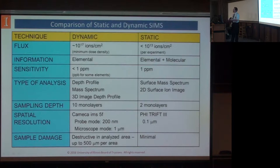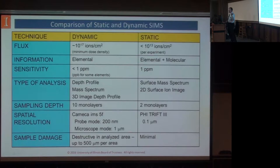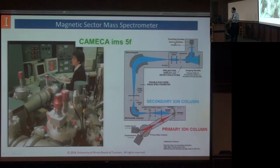Static SIMS came about later and is really neat. The concept is: if we only affect 1% of the surface, is it really destructive? 99% of it's still okay. So if silicon has 10^15 atoms per square centimeter on the surface and we affect less than 10^13 in the experiment, we'll say it's effectively the same — you can come back to the same area and get the same result. When that happens, it allows us to see some molecular things and get 2D surface images. Of the instrumentation we have, one does a very good job for dynamic work and one does a good job for both dynamic and static work.